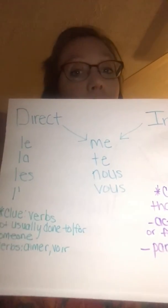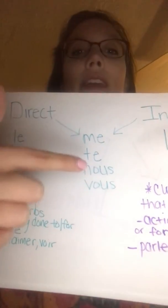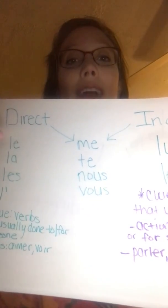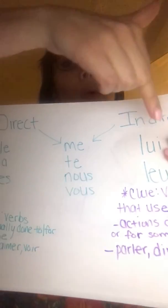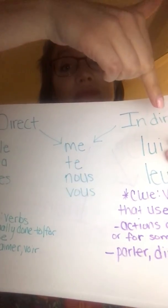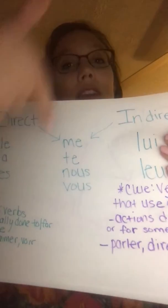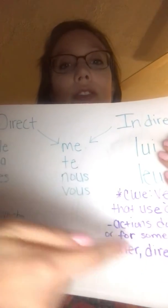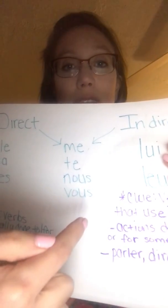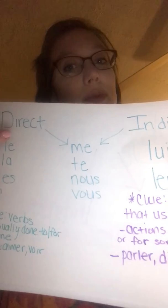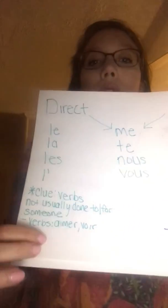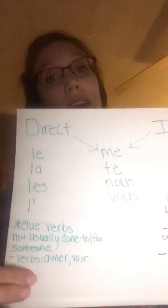In the middle we have me, te, nous, and vous. These ones can be direct or indirect. If they are indirect, they're referring to people and it's an action done to or for somebody. And if they're direct object pronouns, they are going to fall under the category of not being done to or for somebody.